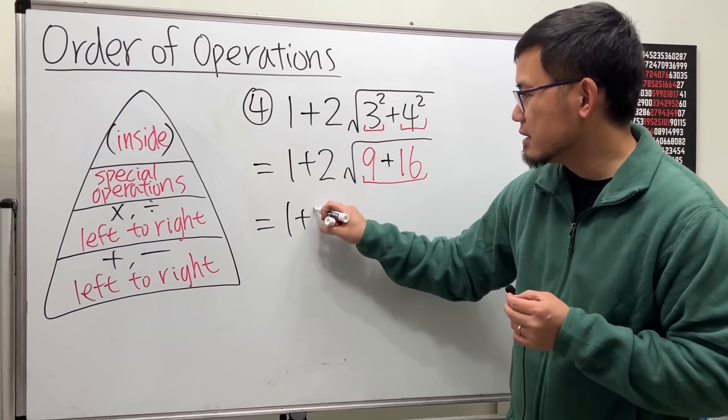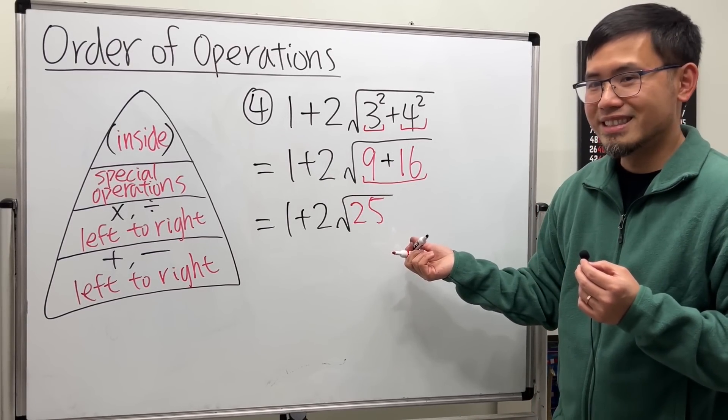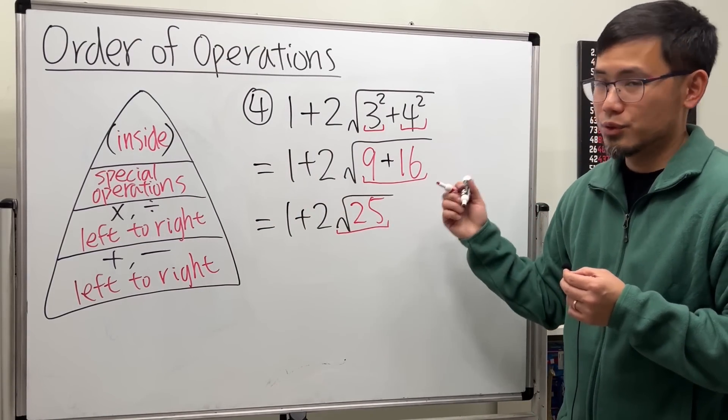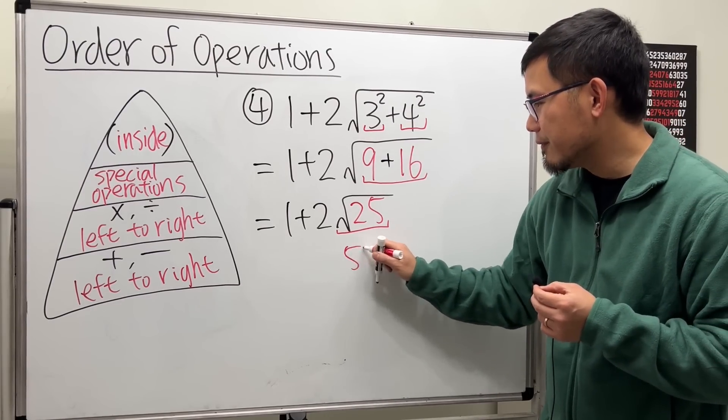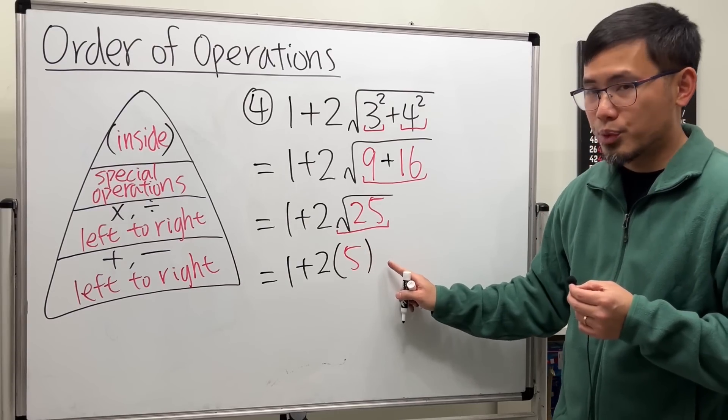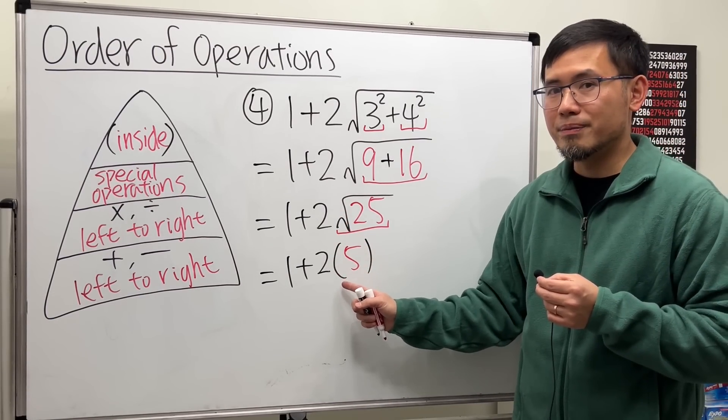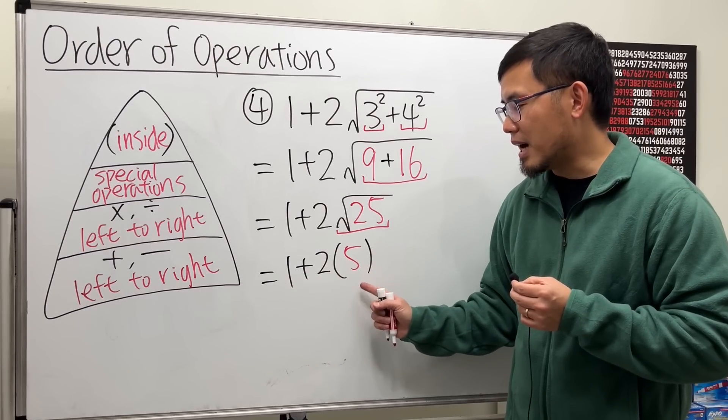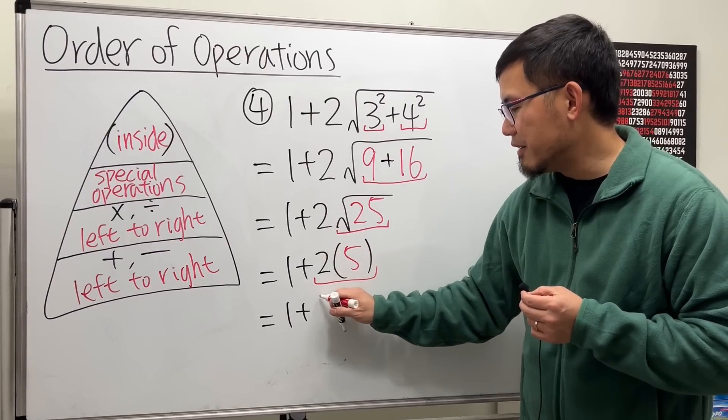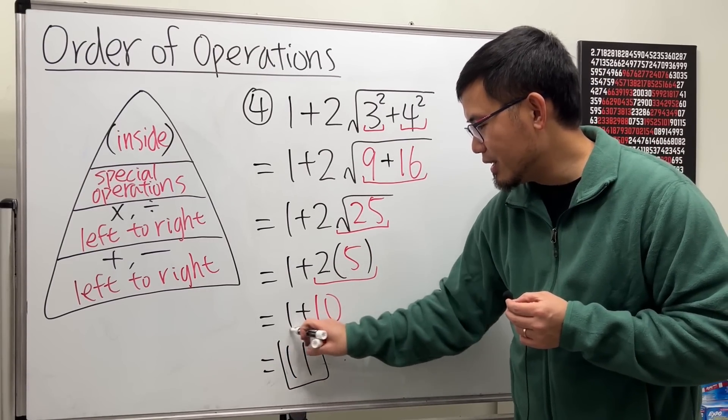And then we have 1 here, plus 2 here. And remember to put down our parenthesis, because when there's nothing between, it means that we're going to multiply that. So now 1 plus 2 times 5, we multiply this first. Bring down the 1. 2 times 5 is 10. And finally we see that 1 plus 10 is just 11, and then we are done.